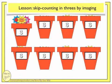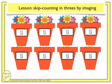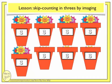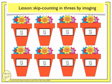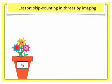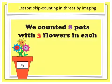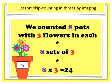3, 6... Did you have an image in your mind of the flowers in the pots before they grew out? Did you also get a total of 24? We counted 8 pots with 3 flowers in each. Another way to say that is 8 sets of 3, and a way to write it would be 8 times 3.